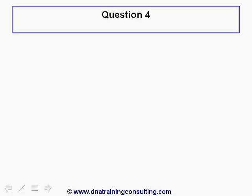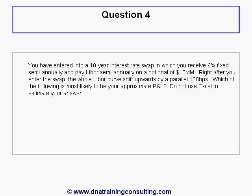Question 4. You have entered into a ten-year interest rate swap in which you receive 6% fixed semi-annually and pay LIBOR semi-annually on a notional of $10 million. Right after you enter the swap, the whole LIBOR curve shifts upwards by a parallel 100 basis points. Which of the following is most likely to be your approximate P&L? Do not use Excel to estimate your answer.